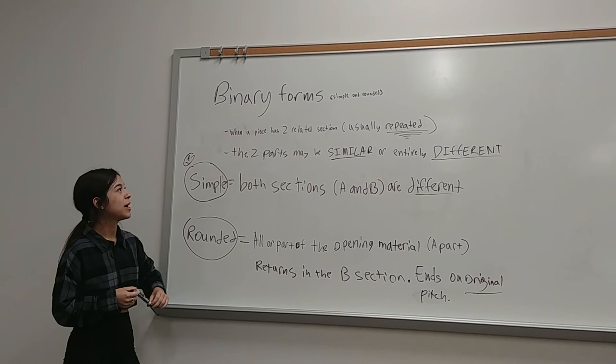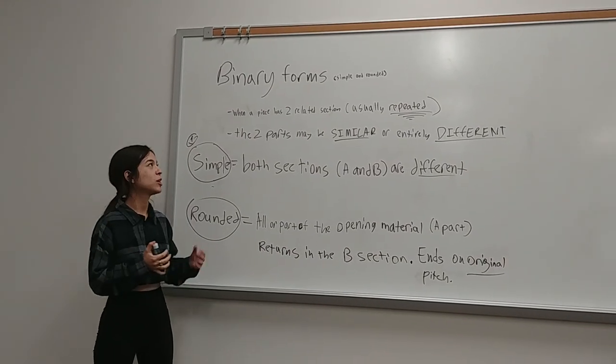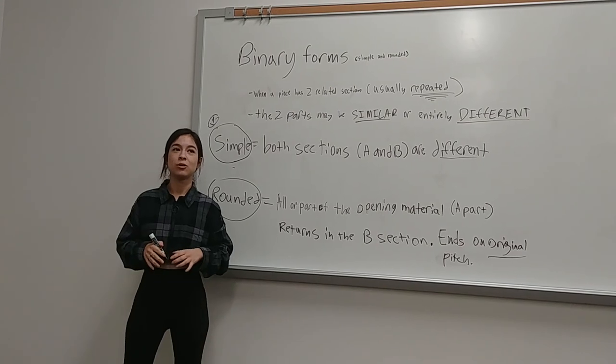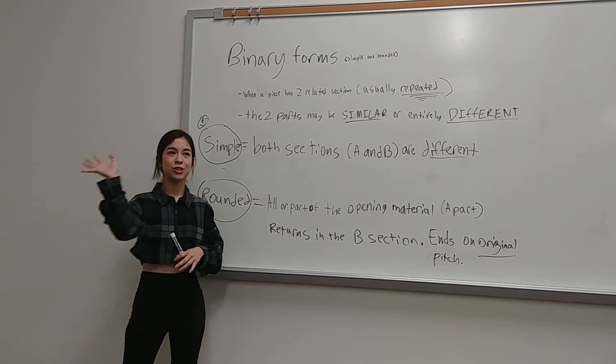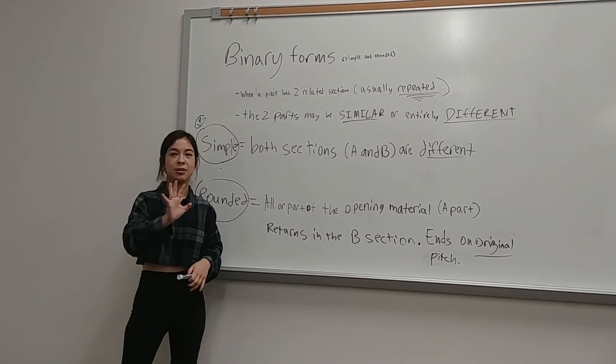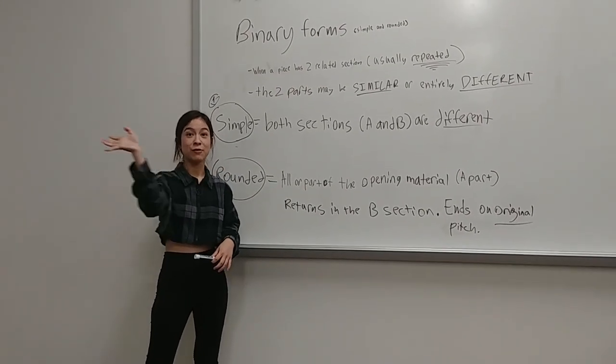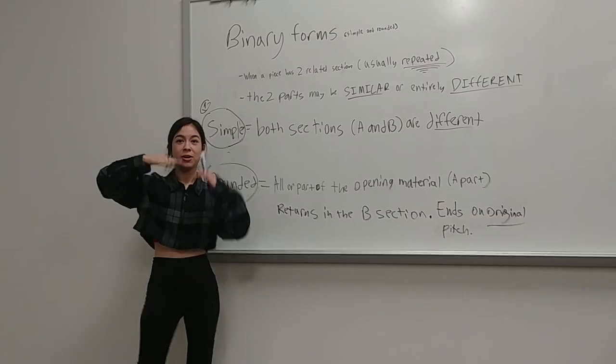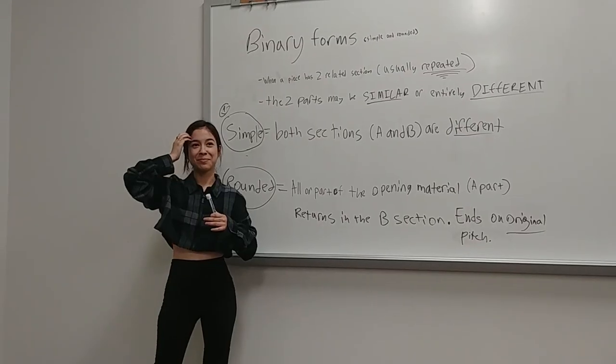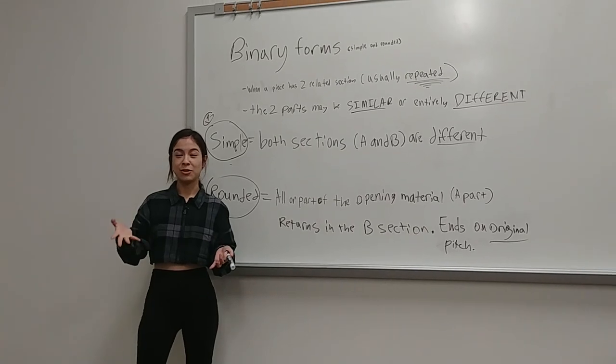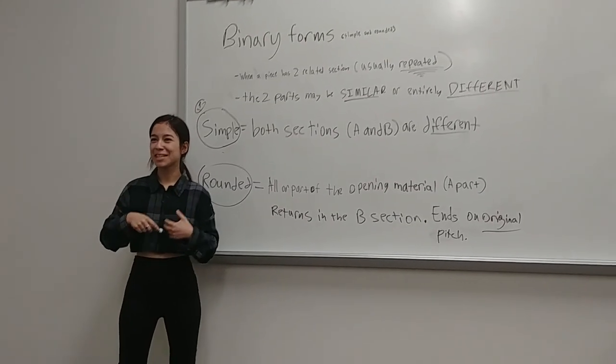Binary forms. Simple and rounded binary. It's usually when a piece has two related sections. So, usually you'll go through the first part, then you'll go through the second part. And then you'll repeat back to the first part. And you'll see how they are related. Diego, do you want to come up and explain the rest?